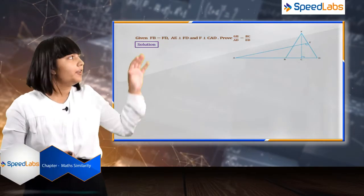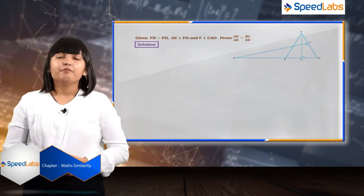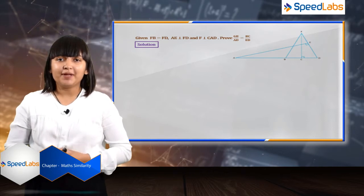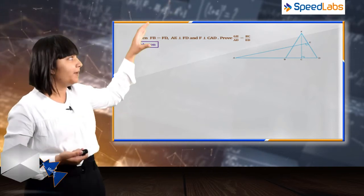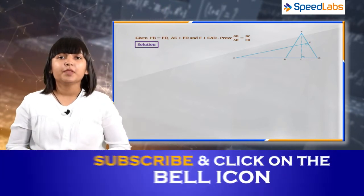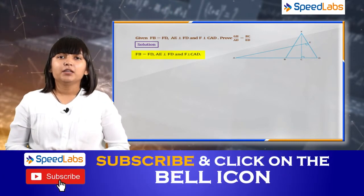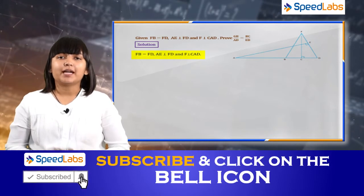In this question we are given a figure with a triangle FBD. The sides FB and FD of this triangle are equal, and we know that the angles opposite to equal sides are equal.